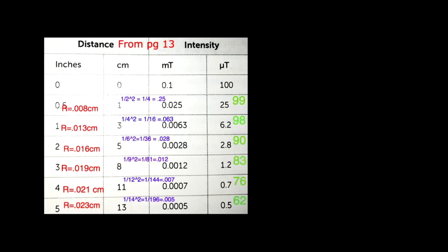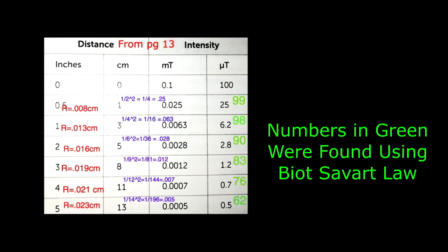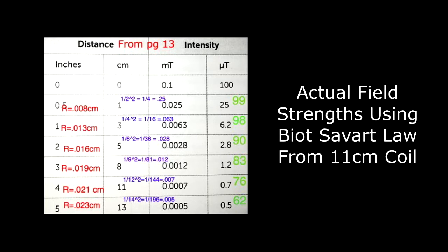Just to give you a sense of how wrong his numbers are, you can see these numbers in green here on the far right-hand column. These are the magnetic field strengths of a 100 microtesla field using an 11-centimeter coil, which is what the IMRS uses. The Beamer uses a coil about that radius as well. Notice how the answers differ. You go from 99 to 98 to 90 to 83 to 76 to 62. I double-checked these numbers. These are the field strengths you would get using the Biot-Savart law from an 11-centimeter coil.